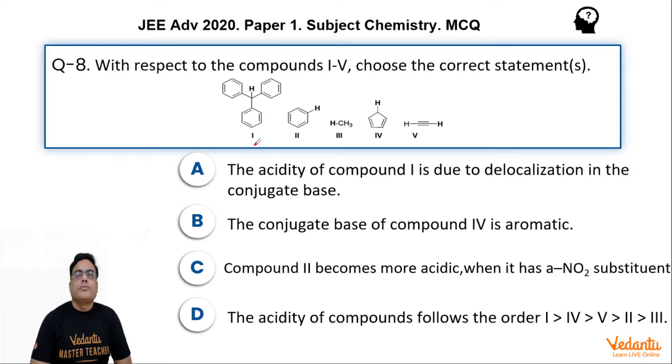These are the compounds: compound number 1 is triphenylmethane, this is benzene, this is methane, this is cyclopentadiene, and this is acetylene or ethyne. You have to find the correct statements - out of 4 statements, one or more than one may be correct.